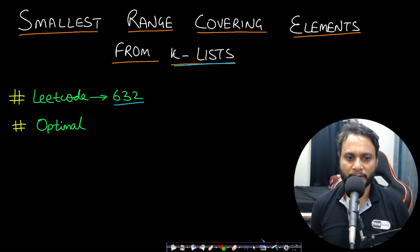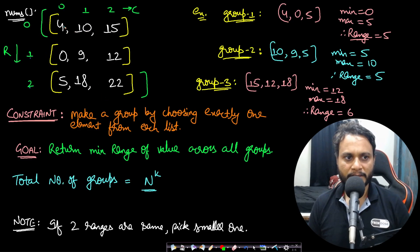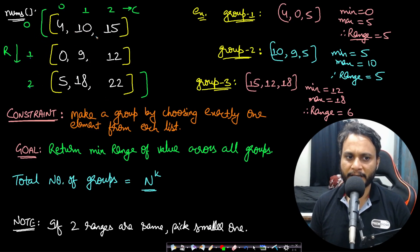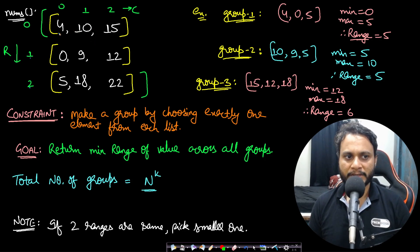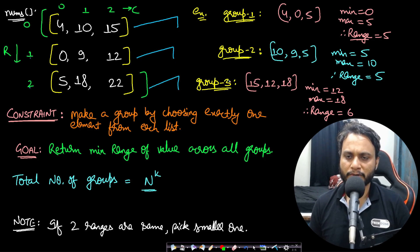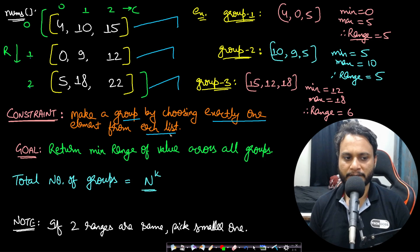Now let's look at some examples for better understanding. In this case, we are given three lists, each having three items. The items in all lists are in non-decreasing order. Our constraint is to make a group by choosing exactly one element from each list, and our goal is to return the minimum range of values across all groups.